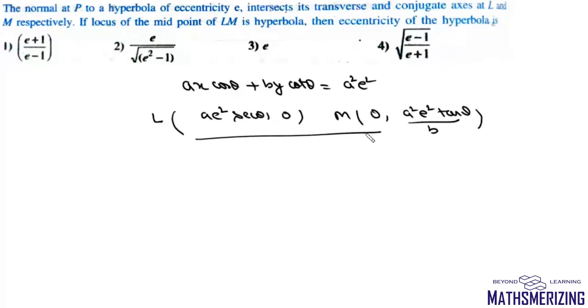Now we need to find the locus of the midpoint of LM. Say this locus is point Q whose coordinates are alpha and beta. We can write alpha as A E squared secant theta by 2, and beta will be A squared E squared tan theta upon 2B.